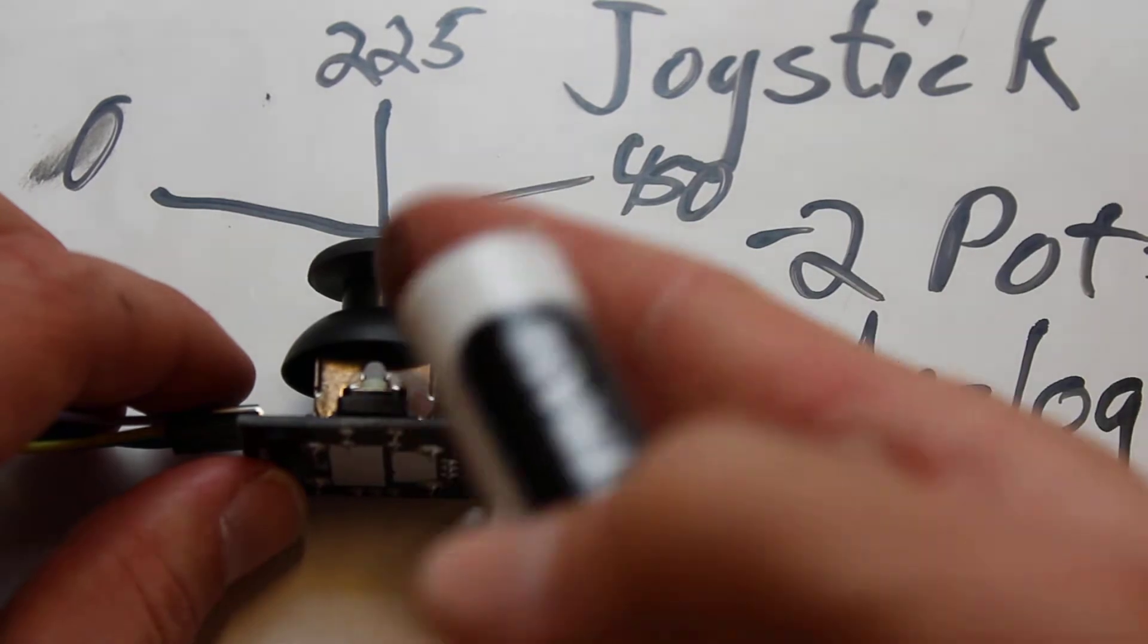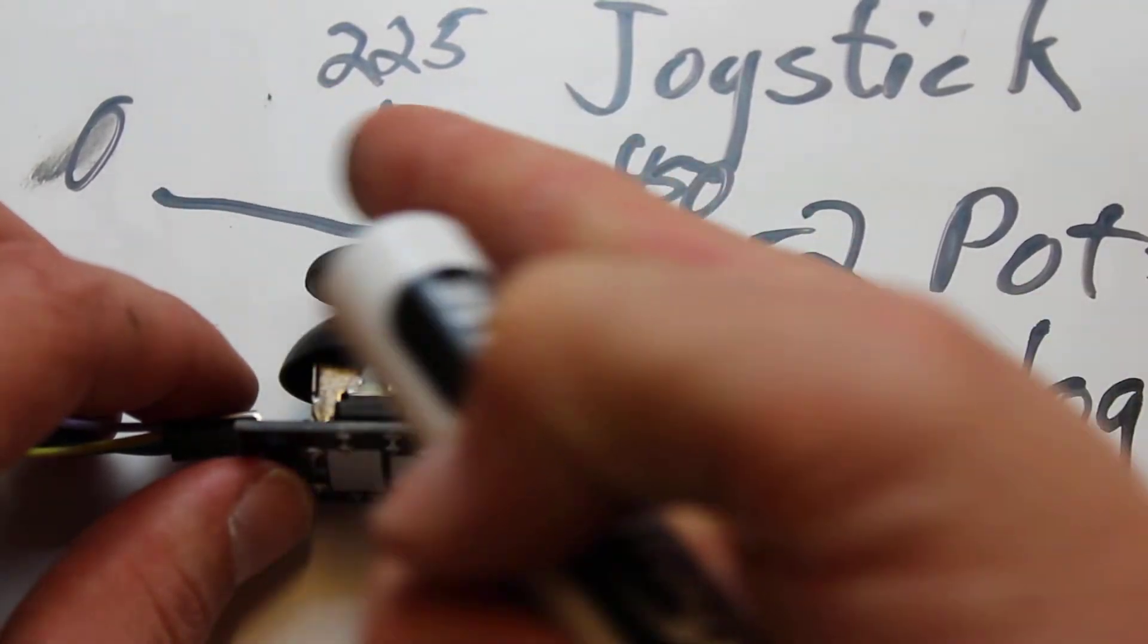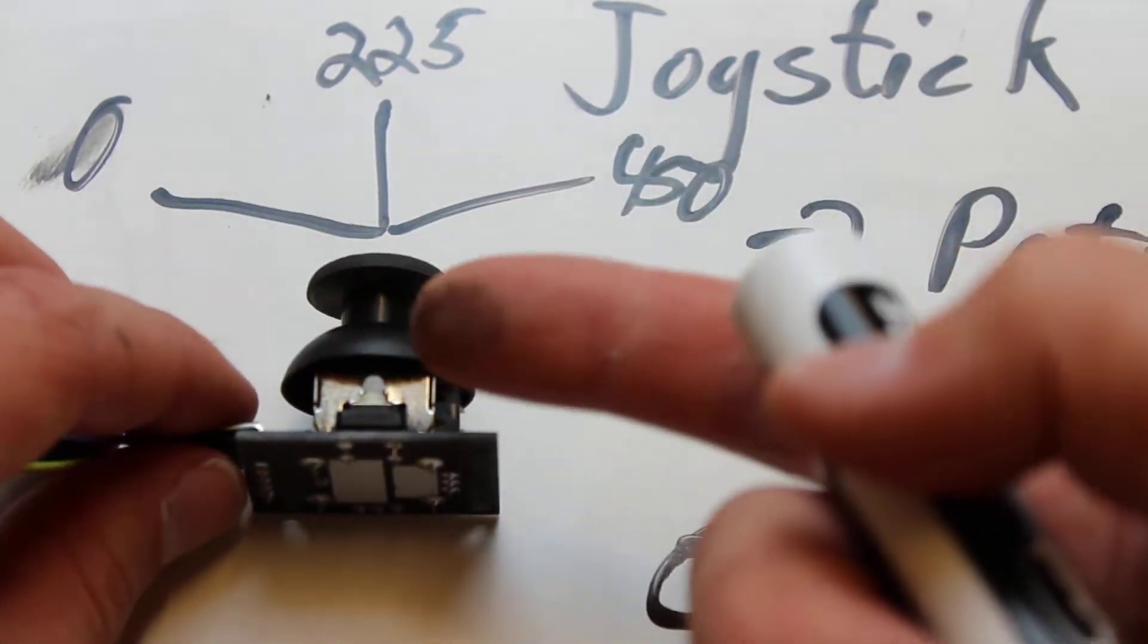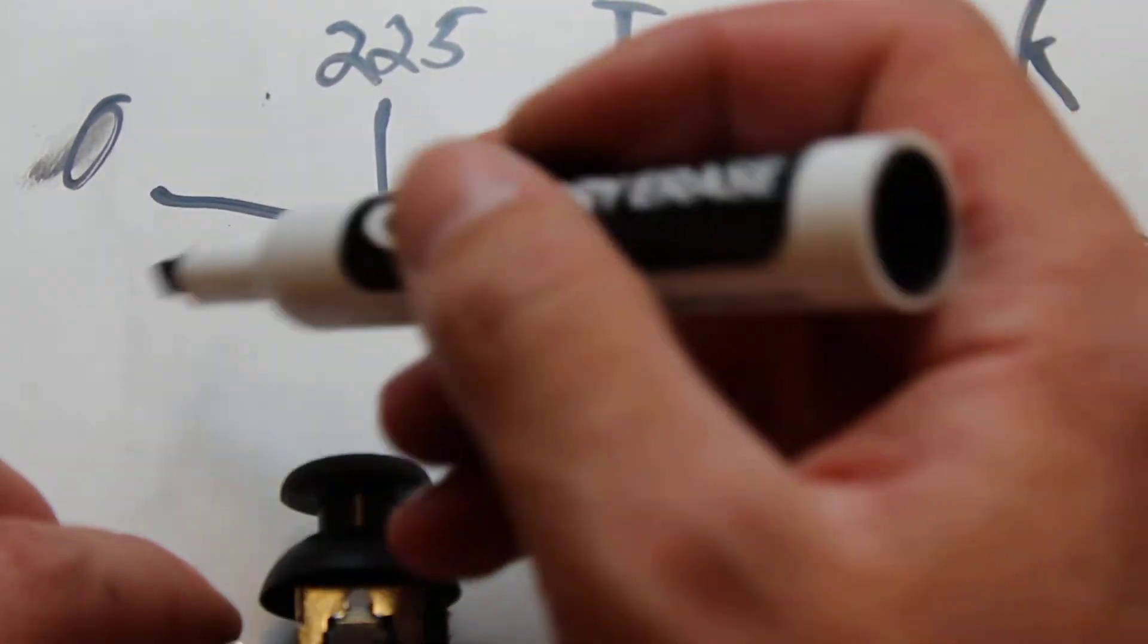Now, again, like I was saying, the way you can adjust this is by treating this like a number line. And whatever value you're getting out of this sensor, subtract 225.